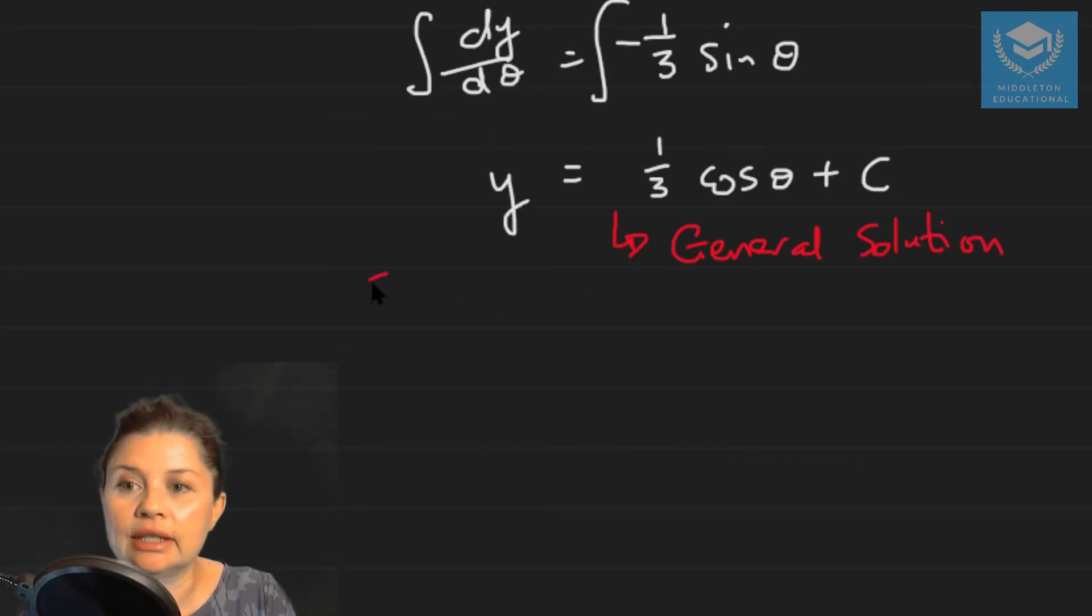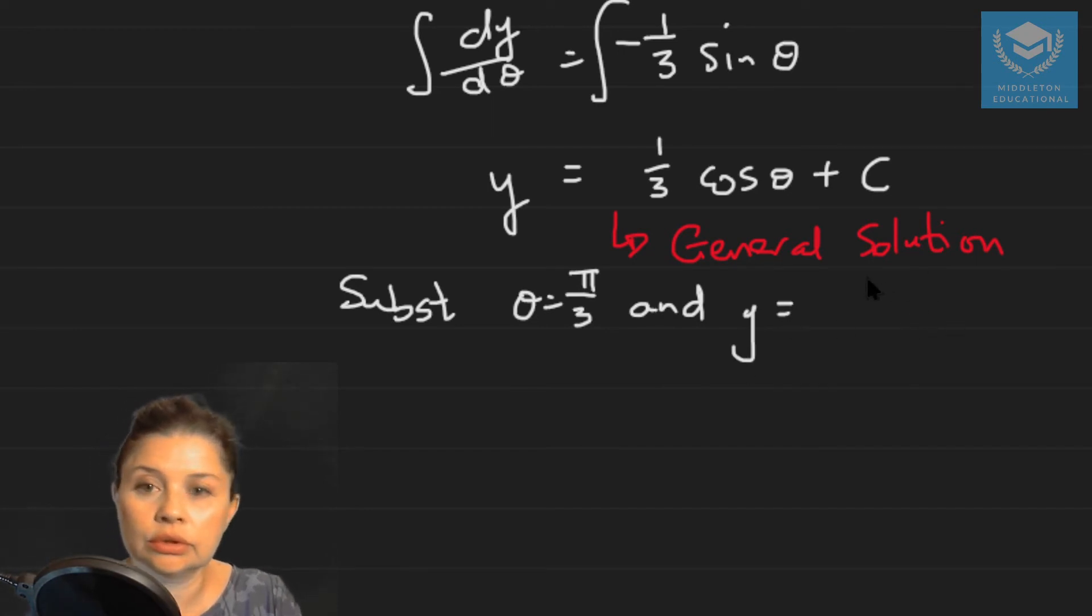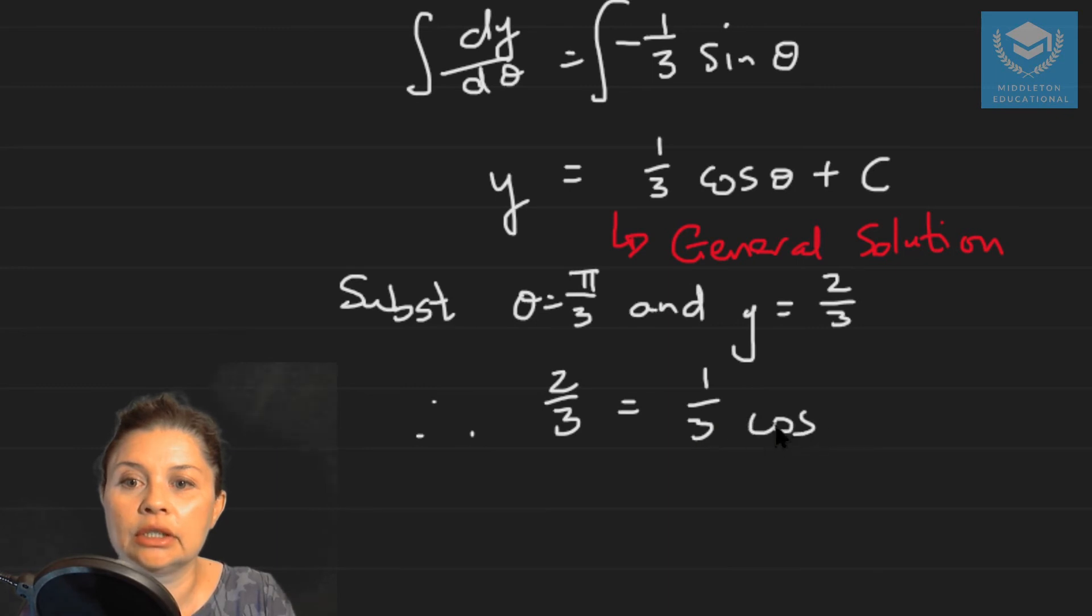So we can then substitute theta equals pi over 3 and y equals 2 over 3, which means we get 2 over 3 equals 1 over 3 cos pi over 3 plus the constant. And that means that our constant is going to simplify to a half.